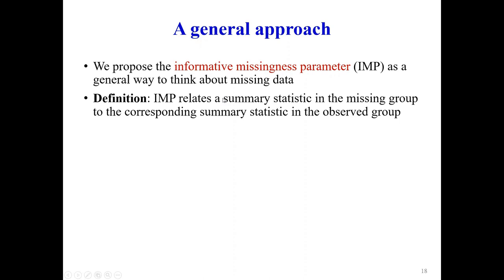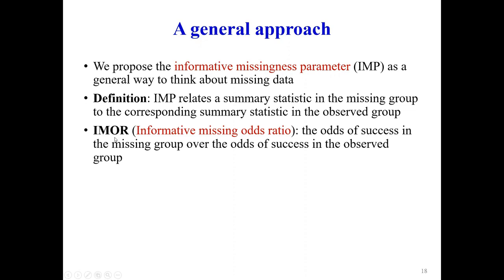We call this the informative missingness parameter because it's a parameter that cannot be informed by the data. We make some assumptions about this parameter, which relates the outcome in the missing data to the outcome in the observed data — specifically, how the outcome in the missing participants is related to the outcome in the observed participants.